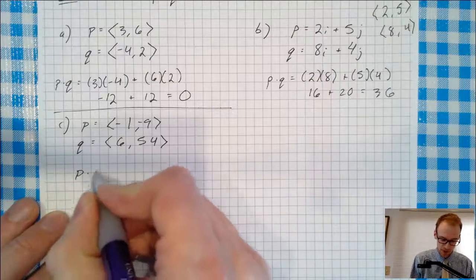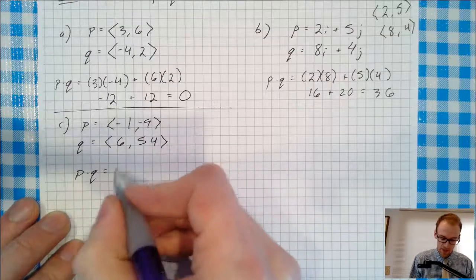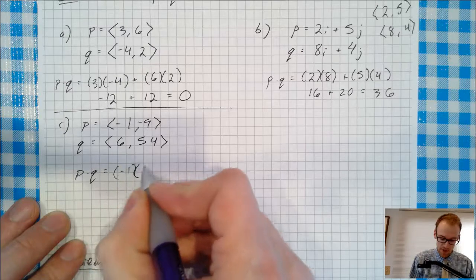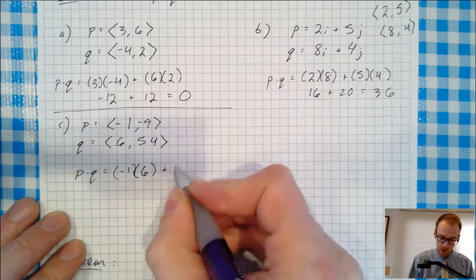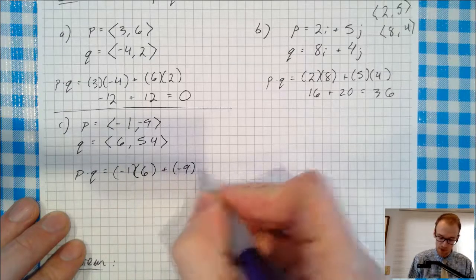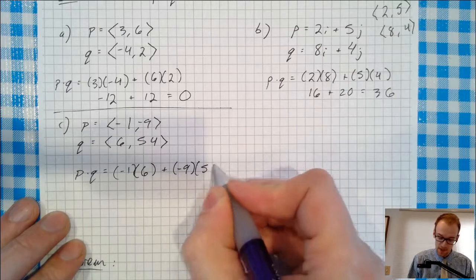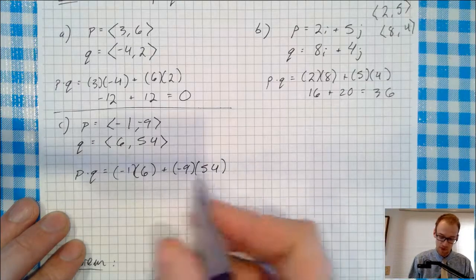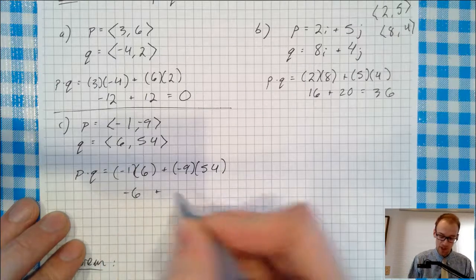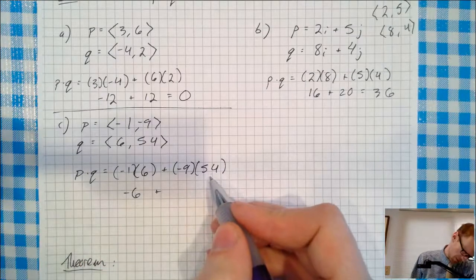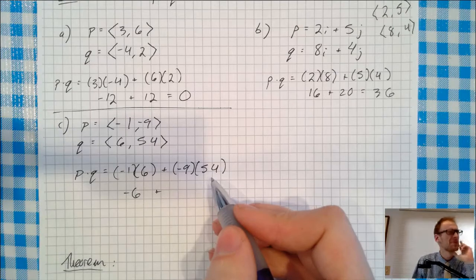Dot product for part C, P dot Q is the x components, negative 1 times 6, plus the y components, the product of the y components, negative 9 times 54. Oof, I might need my calculator for that one. Negative 1 times 6 is negative 6, plus, let's see, 10 times 54 would be 540, and take away one of those 54s.